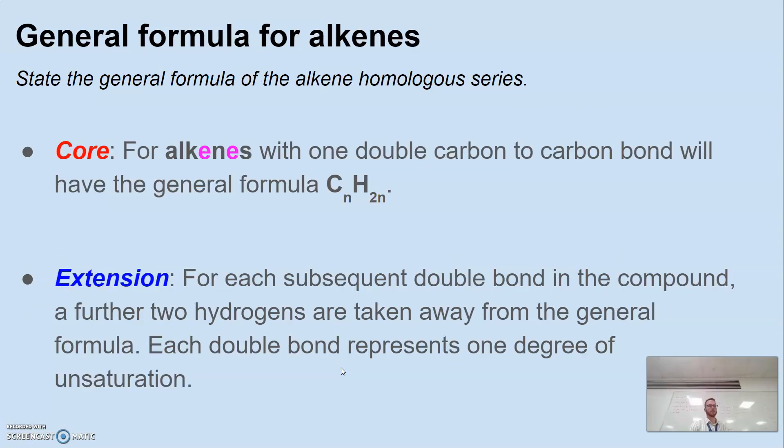General formula. Alkenes with one double carbon bond has the general formula CnH2n. So what do we notice? Compared to alkanes, which is CnH2n plus 2, what's changed? We lost the 2, so we've lost 2 hydrogens. And the extension is we can have multiple double bonds in a molecule, and we lose 2 hydrogen bonds per additional double bond present. But at year 10, we only look at alkenes that have a single double bond. So if I had 6 carbons, how many hydrogens do I have for an alkene? 12. Fantastic. If I had 12 carbons? 24. Excellent.